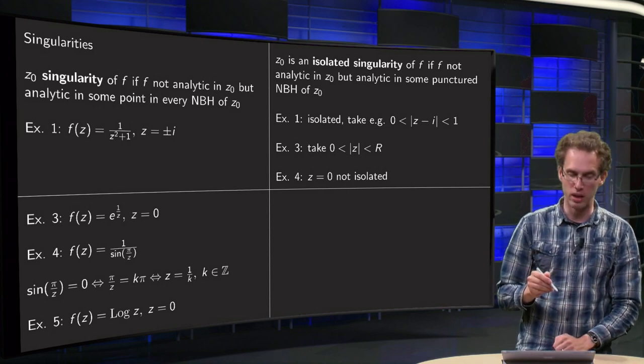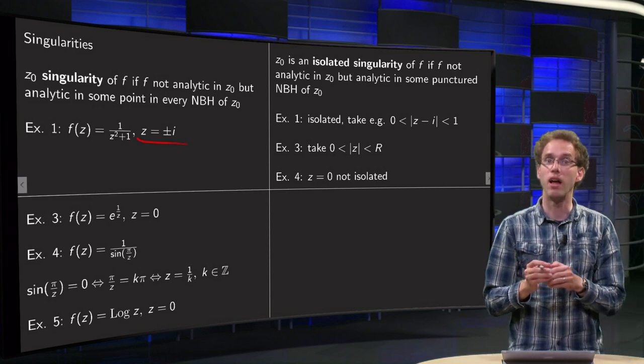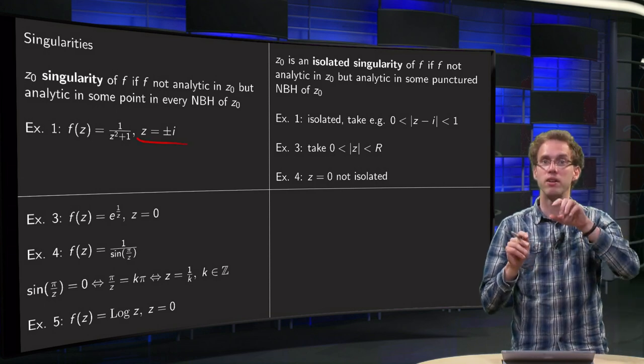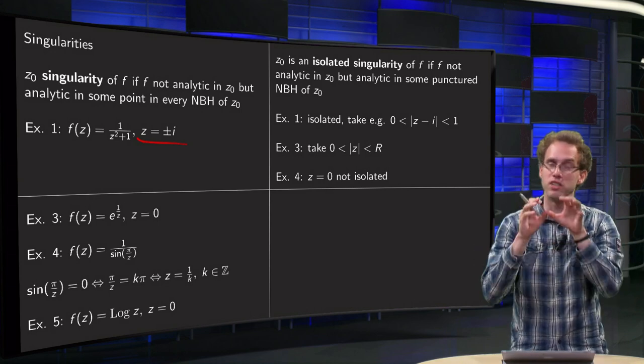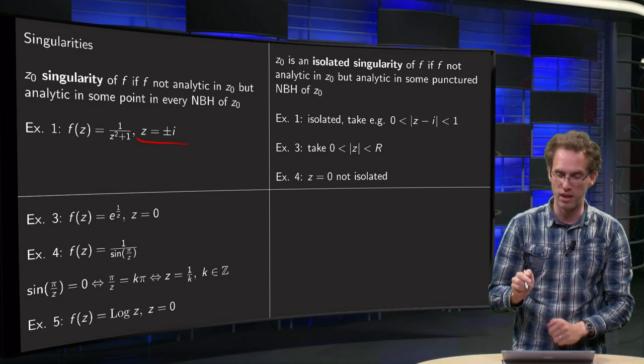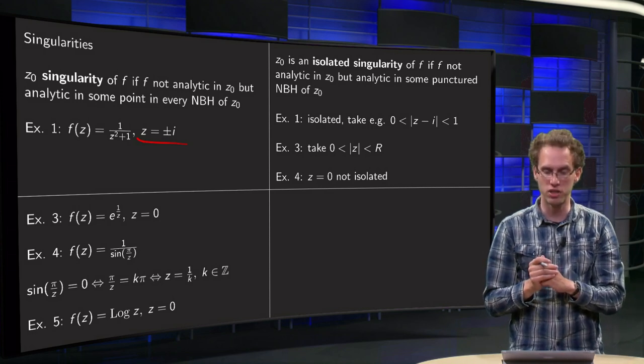Well, for our first example, the plus or minus i are fine. You have your plus or minus i, you can draw, for example, a disk with radius 1 around both of them, and inside those disks all your points are analytic, so in example 1 the points are isolated singularities.